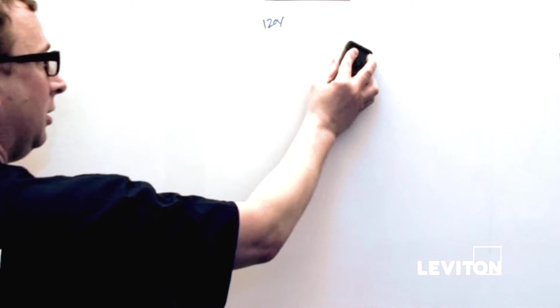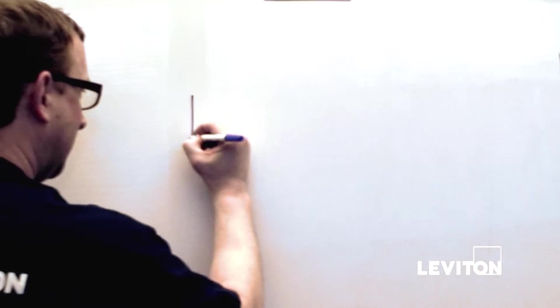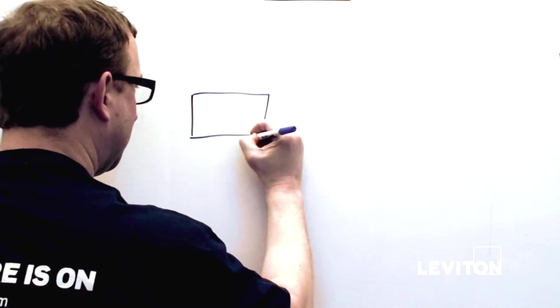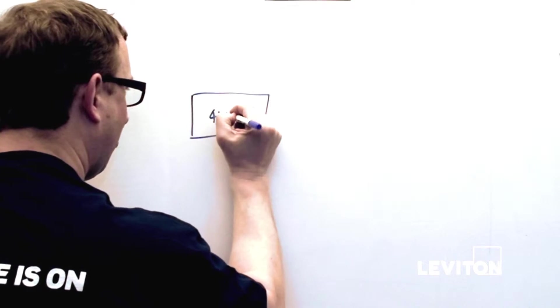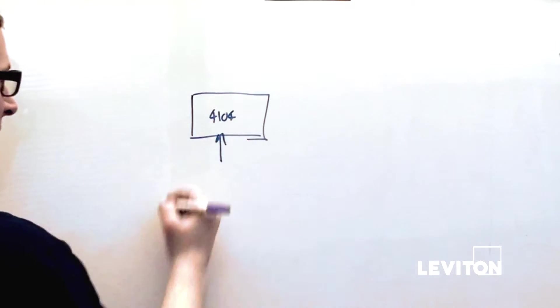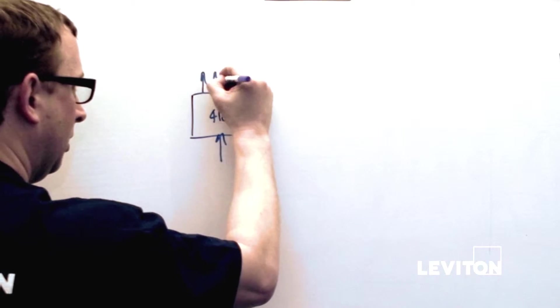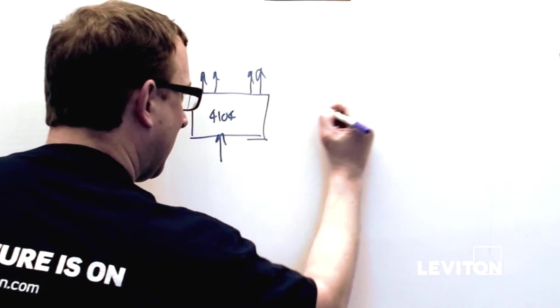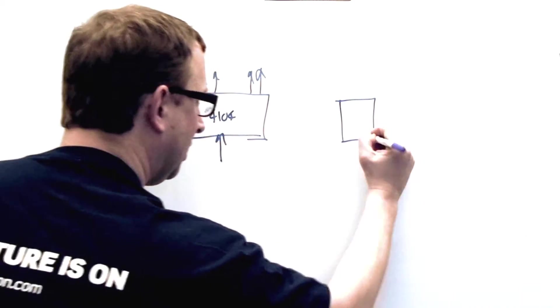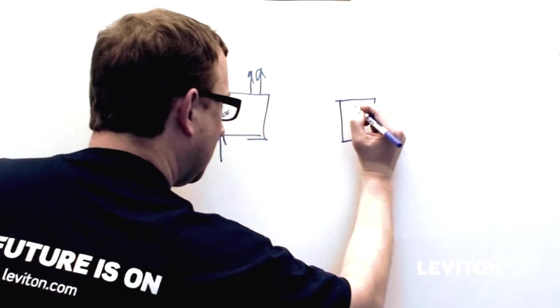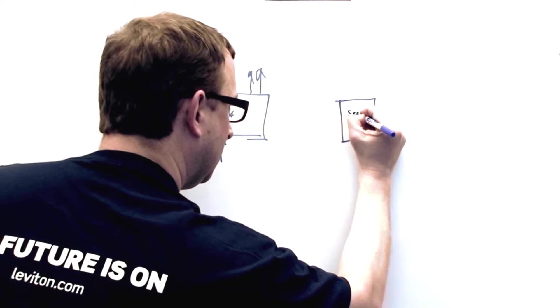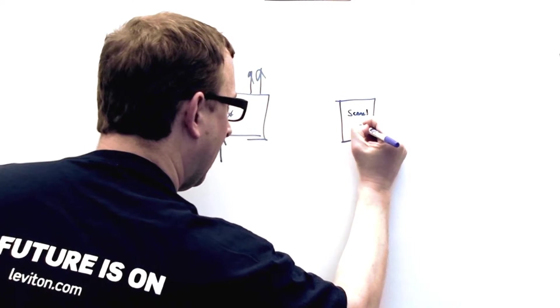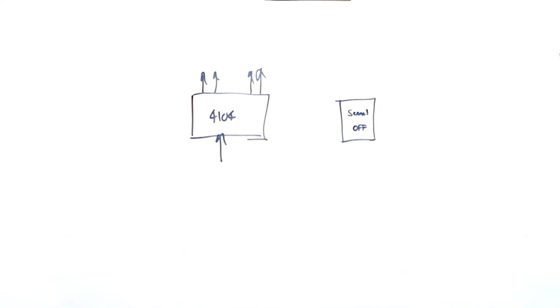Now let's look at a couple variations. What happens if we're using an entry station in the system? Well in that system, we're going to have a master station. Let's stick with the 4104 for a minute. It's still going to have power going in and individual controlled circuits going out. I'm going to add to that an entry station. For simplicity, let's just use one that does scene one and off. That's one of the entry station models that we have.